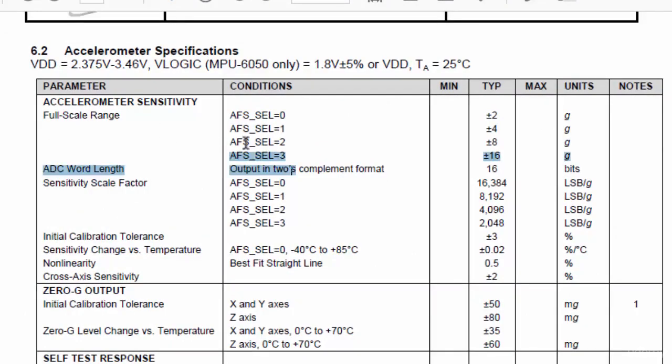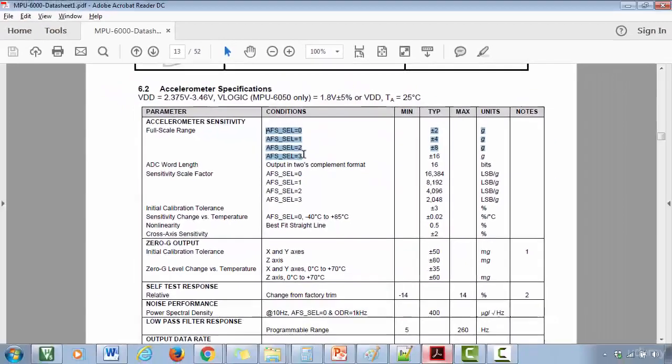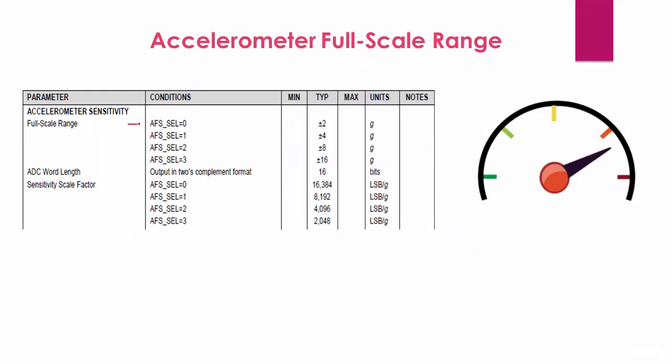Let's take this case. If you select this full-scale range, then the sensor can measure up to plus or minus 2g of acceleration. Suppose if you are using this sensor in a situation or application which is to measure high impact or higher vibrations,